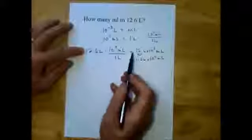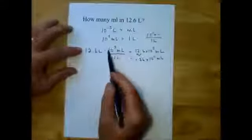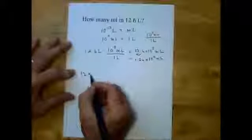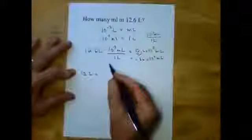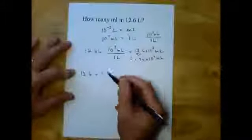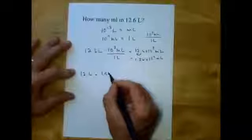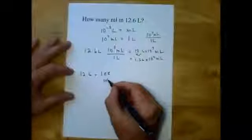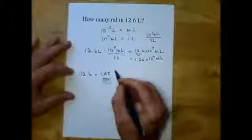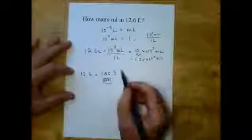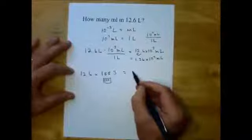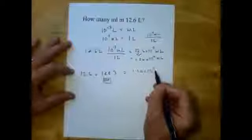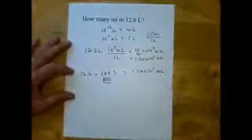We could have entered this directly into the calculator. We enter 12.6 times one EE or EXP — depending on your calculator — to the third, hit equals, and we get 1.26 times ten to the fourth milliliters.